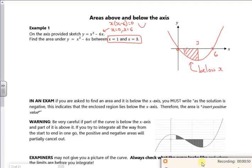If I set up my integral, I'm going to integrate between 1 and 3 of x² - 6x dx. So I've got a third x³, I've got minus 6x² over 2, so I've got minus 3x² between 1 and 3.